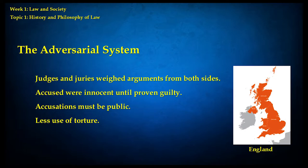We can contrast the inquisitorial system common on continental Europe with another system that was common in England and the British Isles — the adversarial system, the ancestor of modern British and American law. In the adversarial system, judges and juries would weigh arguments from both sides. People file complaints on their own, bring their own evidence or hire an attorney, and judges and juries serve as neutral parties to weigh the evidence and render a judgment. Power is not as concentrated in a single party.